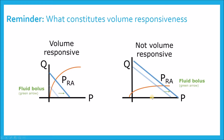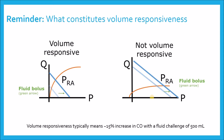What constitutes fluid or volume responsiveness? Usually we refer to volume responsiveness when patients experience an approximately 15% increase in cardiac output with a fluid challenge of 500 mLs. That fluid bolus achieves an increase in the mean systemic filling pressure, which shifts the venous return function. And if the patient is volume responsive, that will translate to an increase in cardiac output.